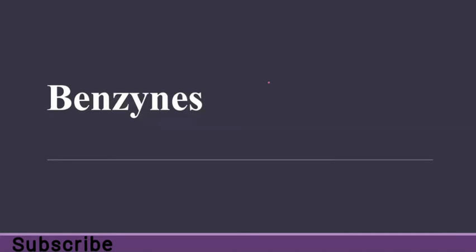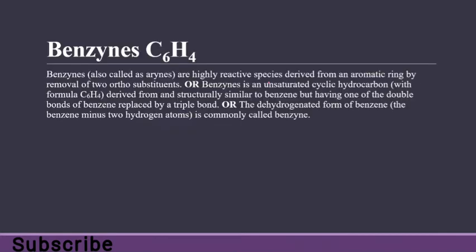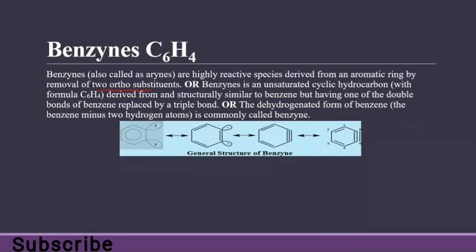Now we talk about benzynes. Benzyne is C6H4. The formula of benzene is C6H6. Benzynes are highly reactive species derived from an aromatic ring by removal of two ortho substituents. We remove two ortho substituents, such as two hydrogen atoms, giving two electrons available from those carbons.